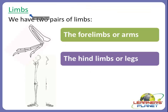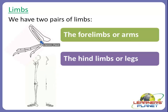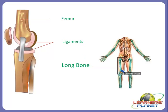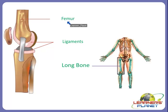We have two pairs of limbs - the forelimbs are the arms and the hind limbs are the legs. This is a picture of the forelimbs or arms and the hind limbs or legs present in the skeletal system. You can see a picture of a long bone here. There is a term for this long bone - these are the limbs connected by ligaments, and the longest bone in our body is termed as the femur.